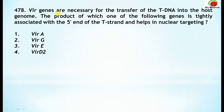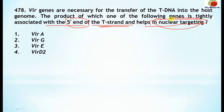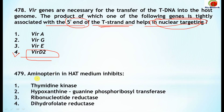Question 478: vir genes are necessary for transfer of T-DNA into the host genome. The product of which one of the following genes is tightly associated with the 5 prime end of the T-strand and helps in nuclear targeting? The correct option is VirD2 — this is the correct one.